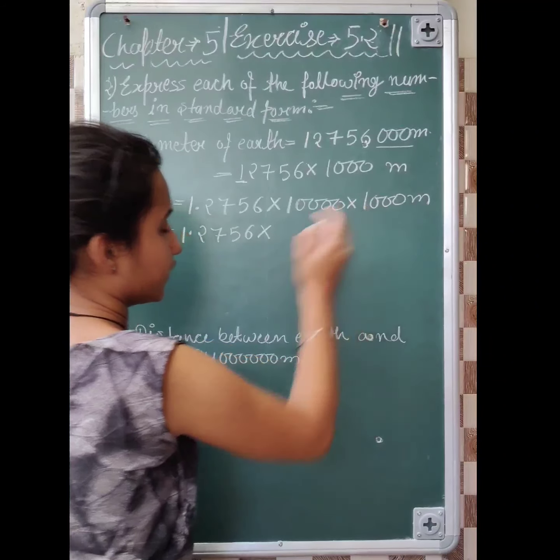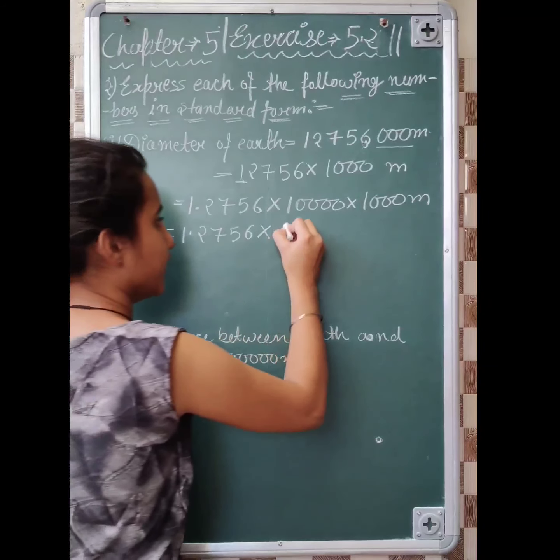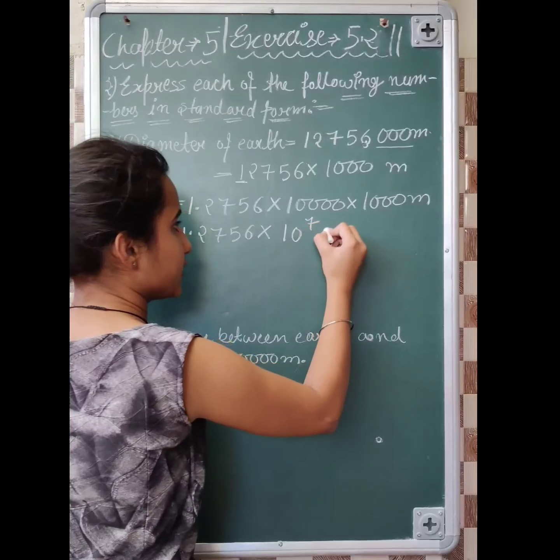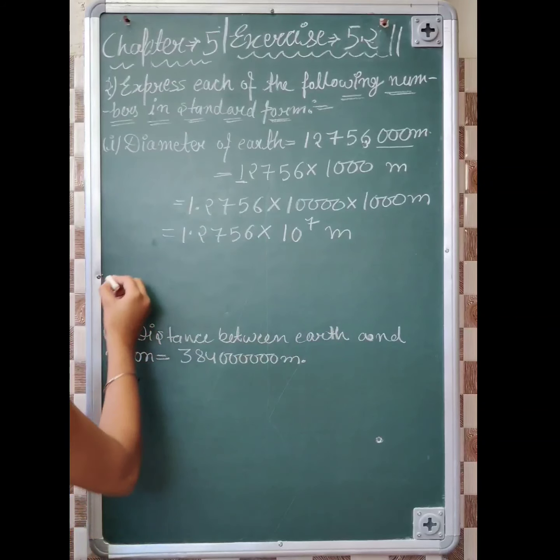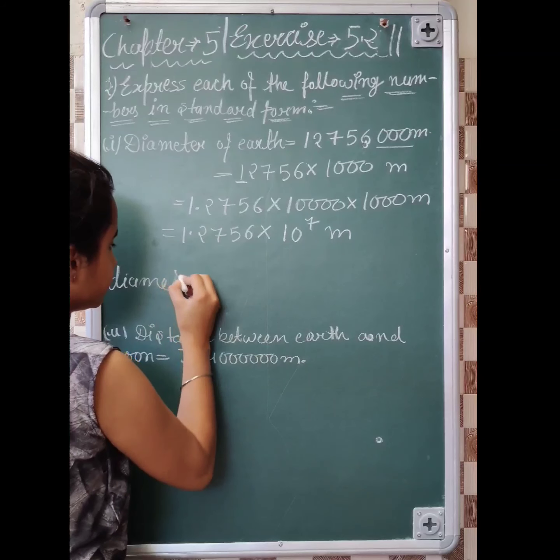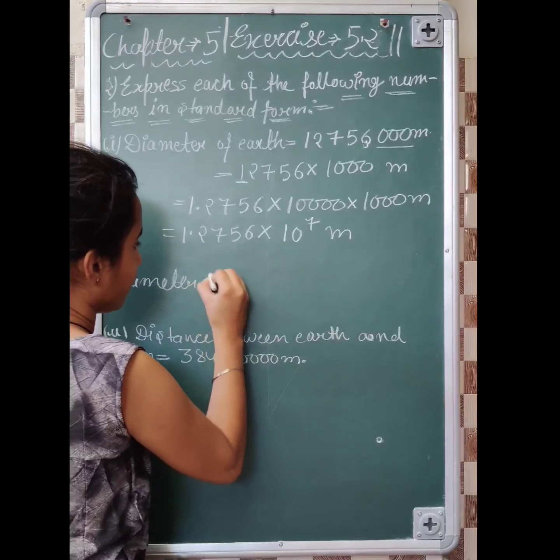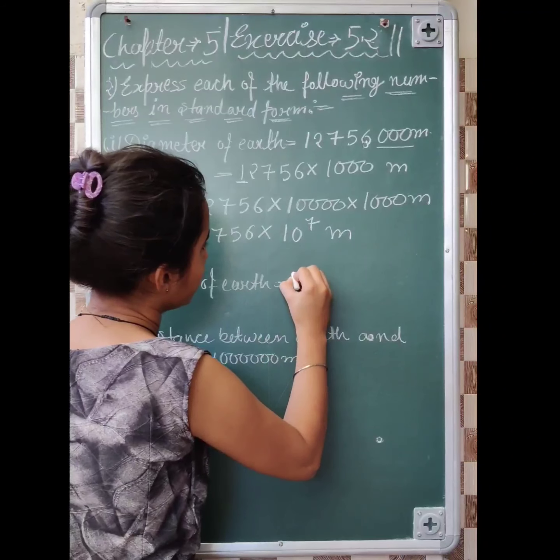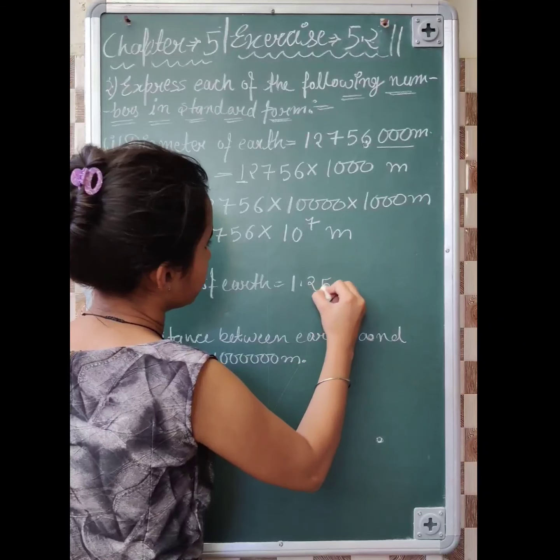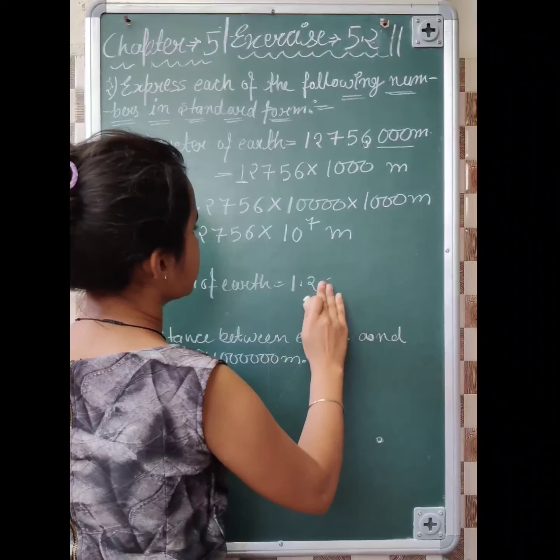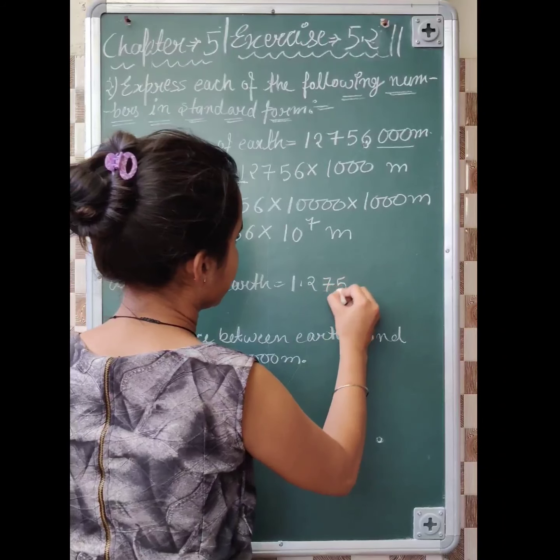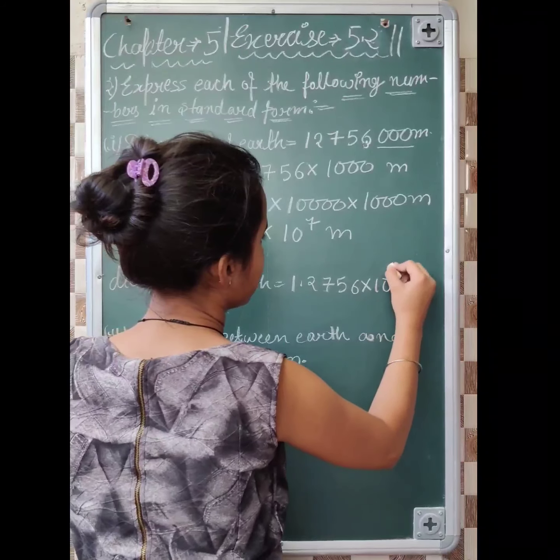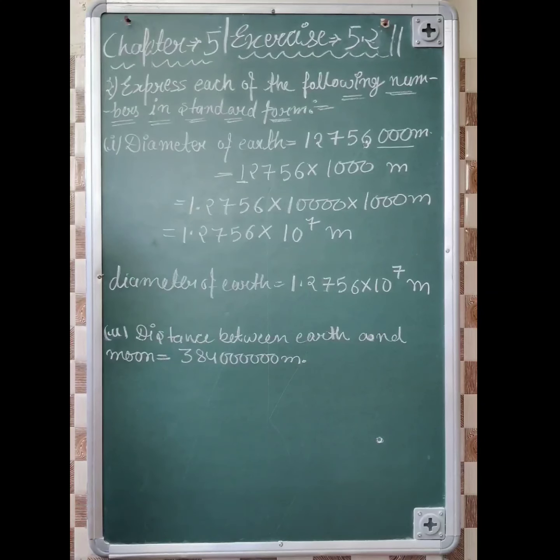You can see 1.2756 into 10 to the power 7. It means 10 raised to the power 7 meters. So what is the diameter of Earth? Is equal to 1.2756 into 10 raised to the power 7 meters.